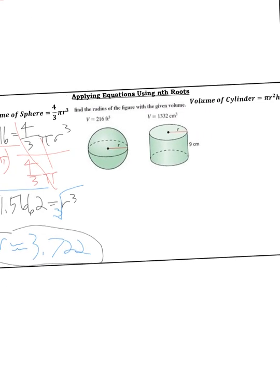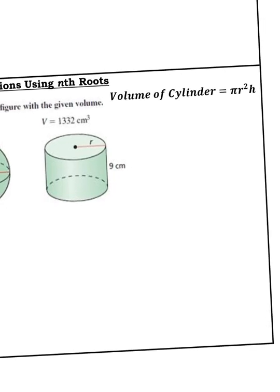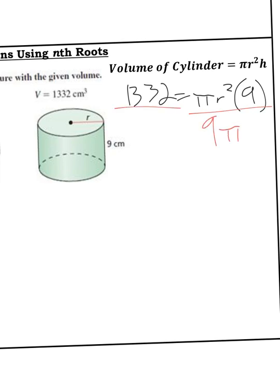Let's do the other one. If you feel up to it, pause it and work it out. Here's the volume of a cylinder formula. I'm going to write 1332 = πr²h. Don't know what r² is, but I know the height, that's 9. So you know 9π. Just divide 1332 by 9π.